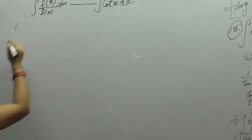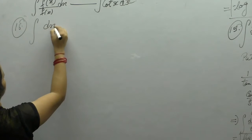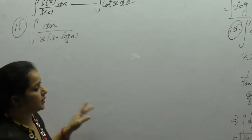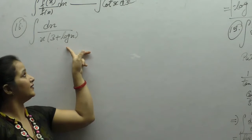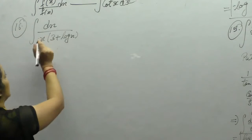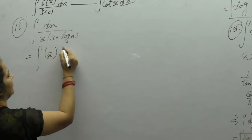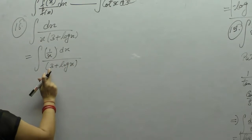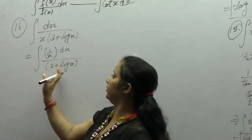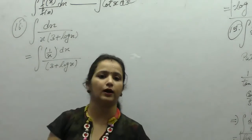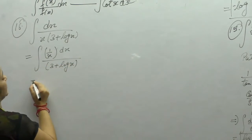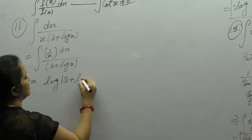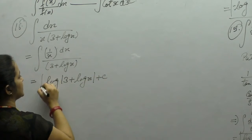The next question is integration of 1/(x(3 + log x)). The derivative of 3 is 0 and the derivative of log x is 1/x. We can write the x in the denominator as 1/x dx. Since we have 1/x in the numerator, we can apply the formula: integral of f'(x)/f(x) = log(f(x)). The answer is log(3 + log x) + c.